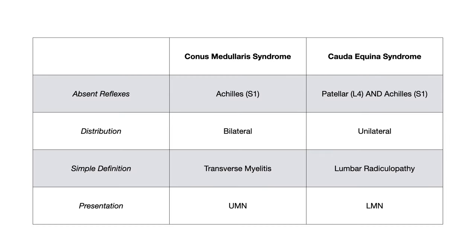This table is the most useful tool for differentiating conus medullaris versus cauda equina. What I didn't put in this table is saddle anesthesia, bowel and bladder incontinence, or timing — early, late, gradual — none of that is useful on an exam. When you're taking an exam, the question is: what are the key differences between these two syndromes, and what do I need to pick out to get the correct answer?